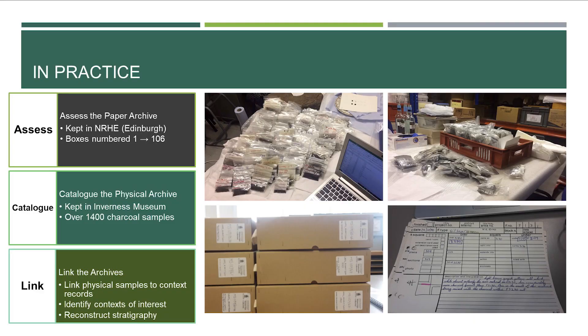The second strand is that a really small sample size wouldn't support precise and complex chronological models. So the second part is assessing the archive, identifying new samples to date, and then making more complex chronological models. In practice this has involved a lot of archival work. I've been moving between the archives in John Sinclair House, where the paper archive is, and the physical archive up in Inverness. I've been through the whole paper archive — it took forever — in boxes numbered 1 to 106, probably around 80-something boxes.